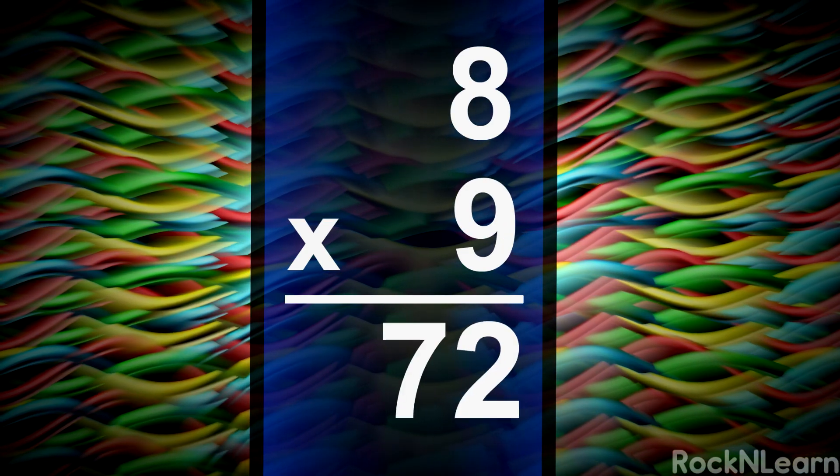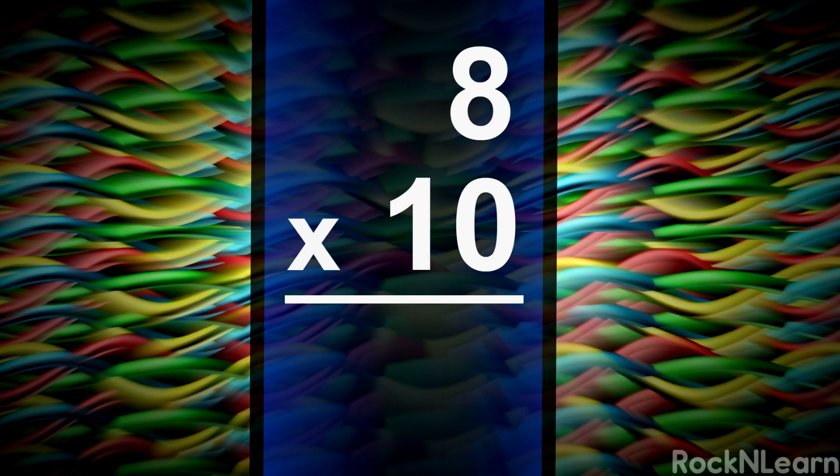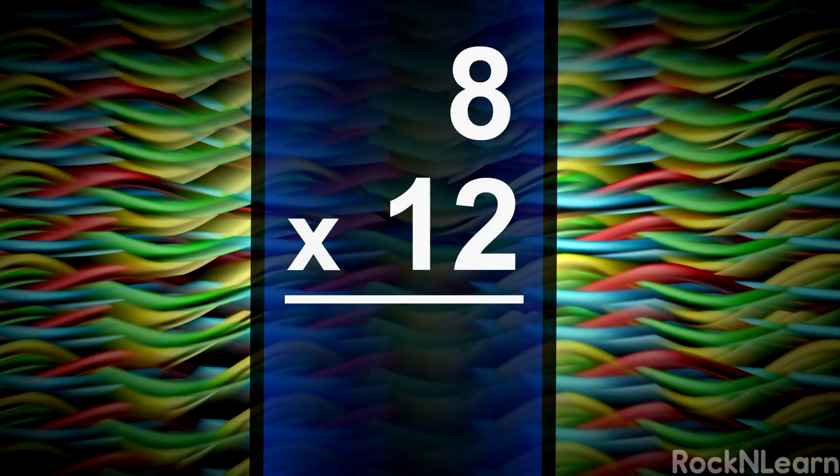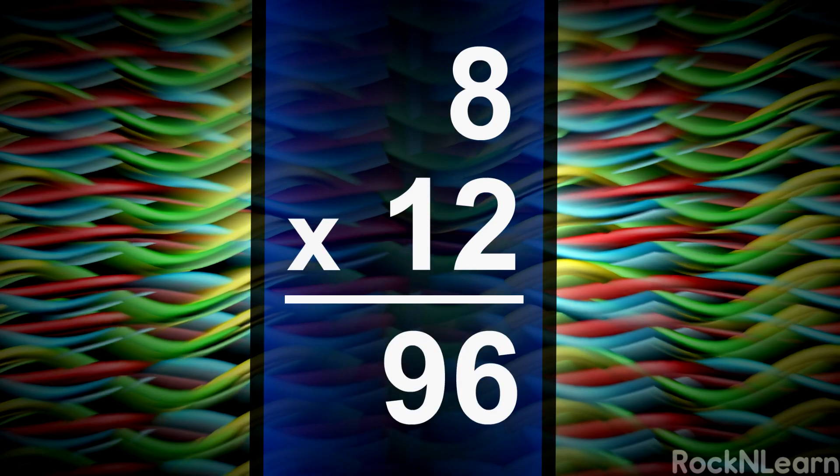8 times 9 is 72, 8 times 10 is 80, 8 times 11 is 88, 8 times 12 is 96.